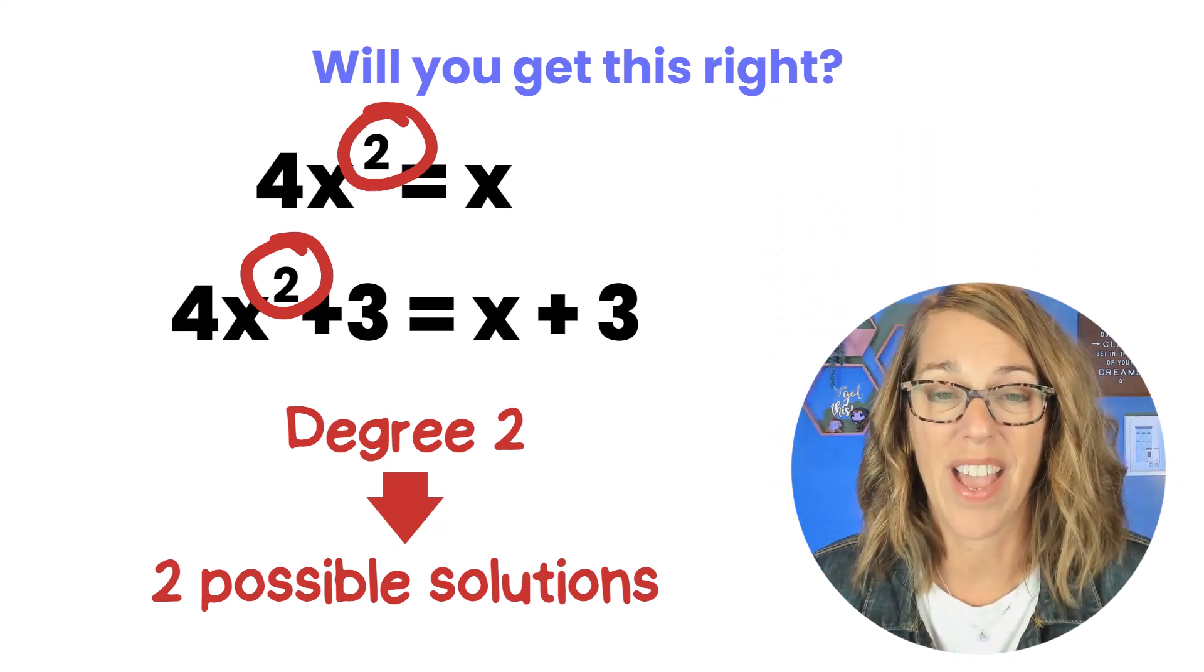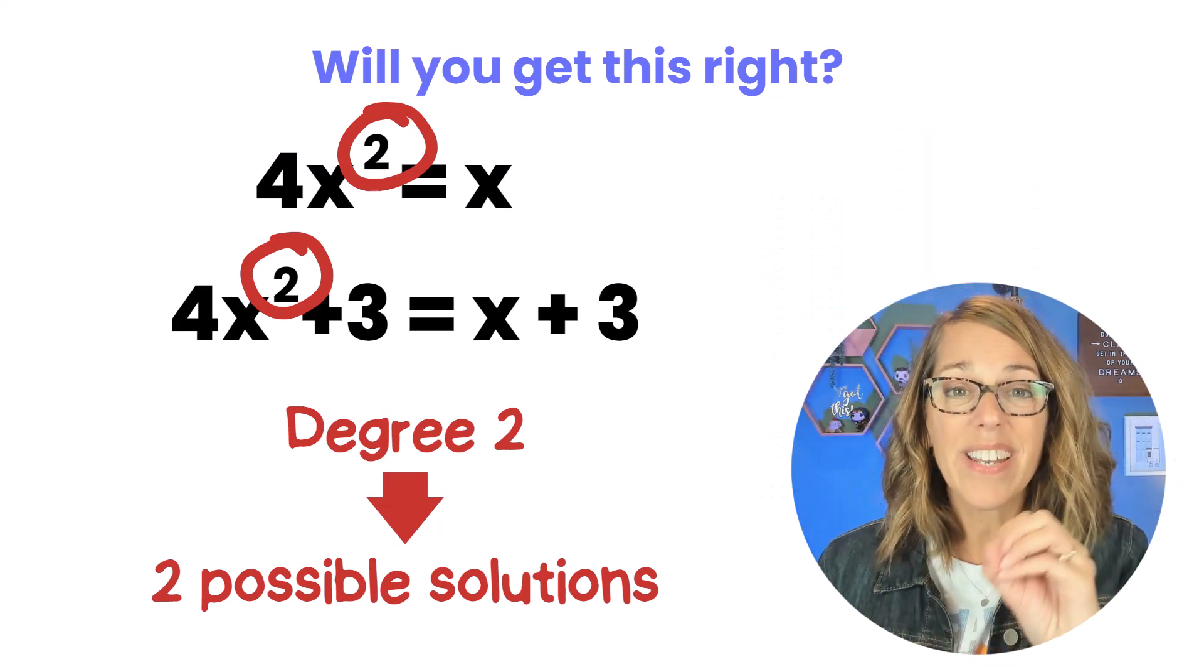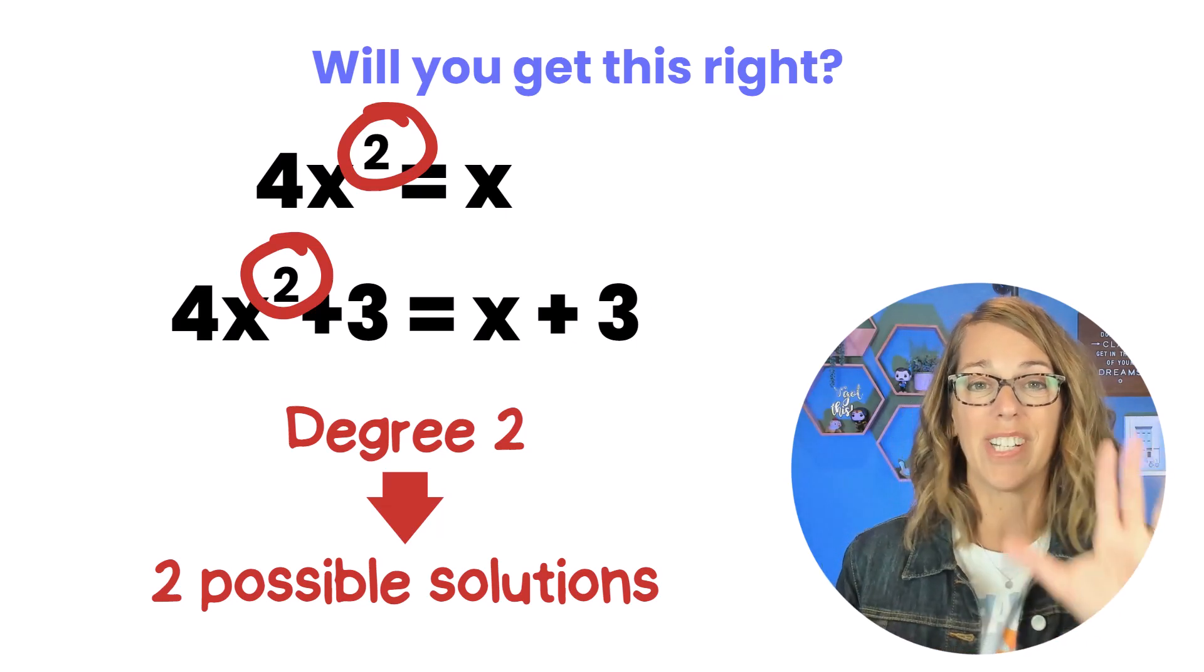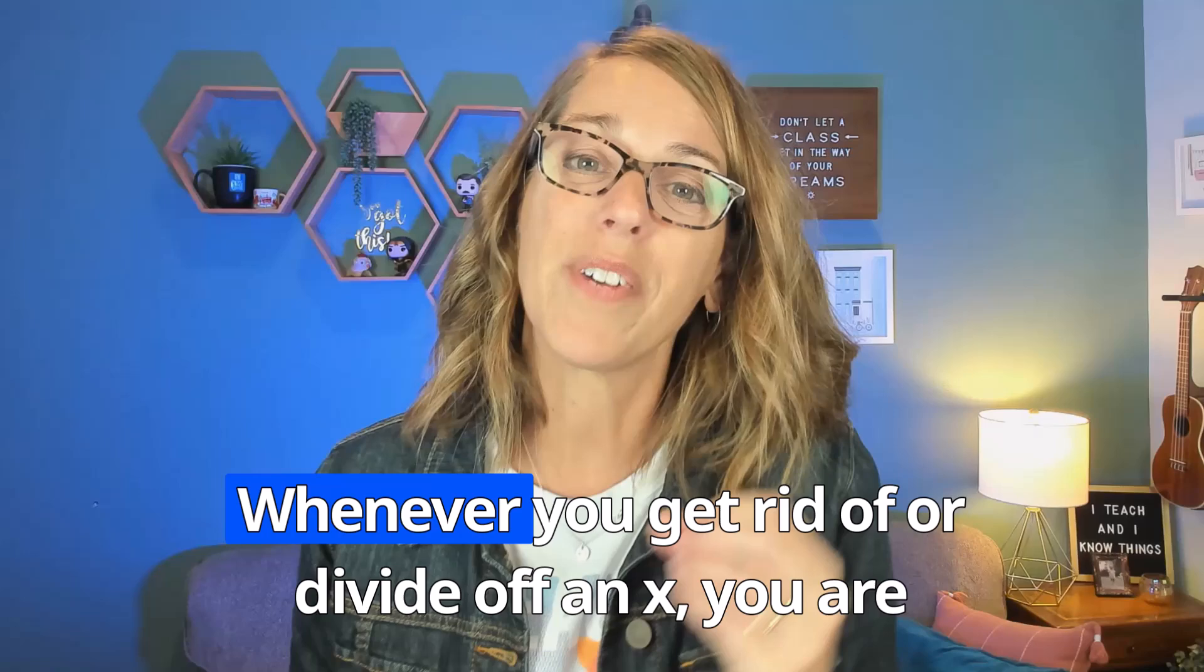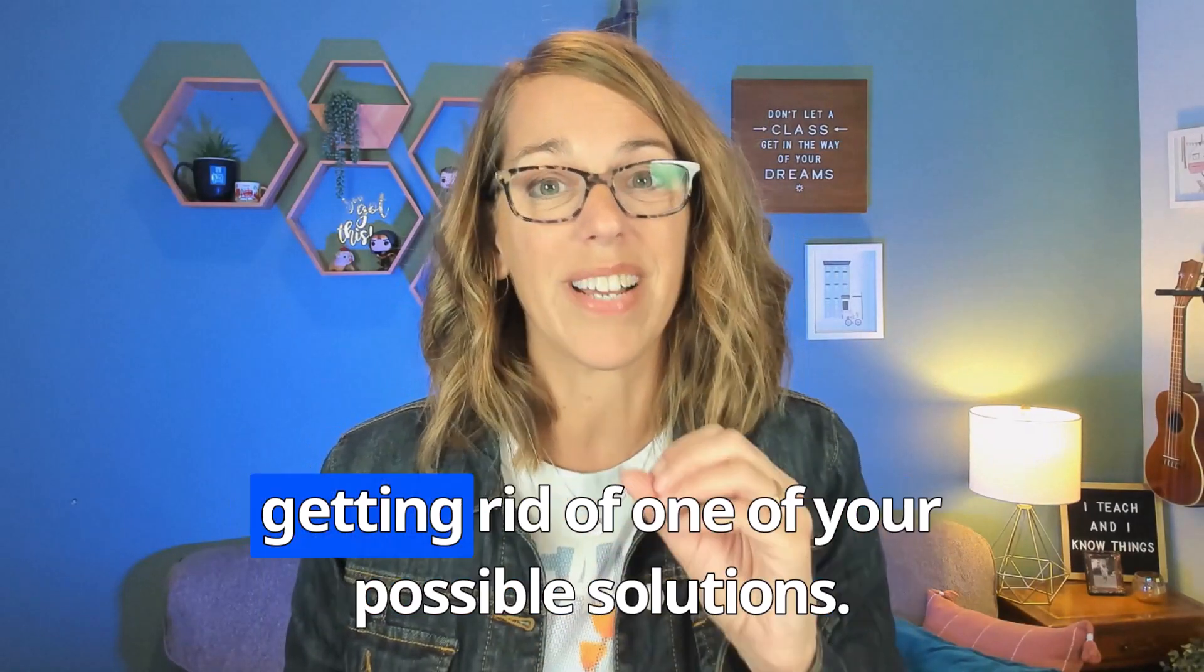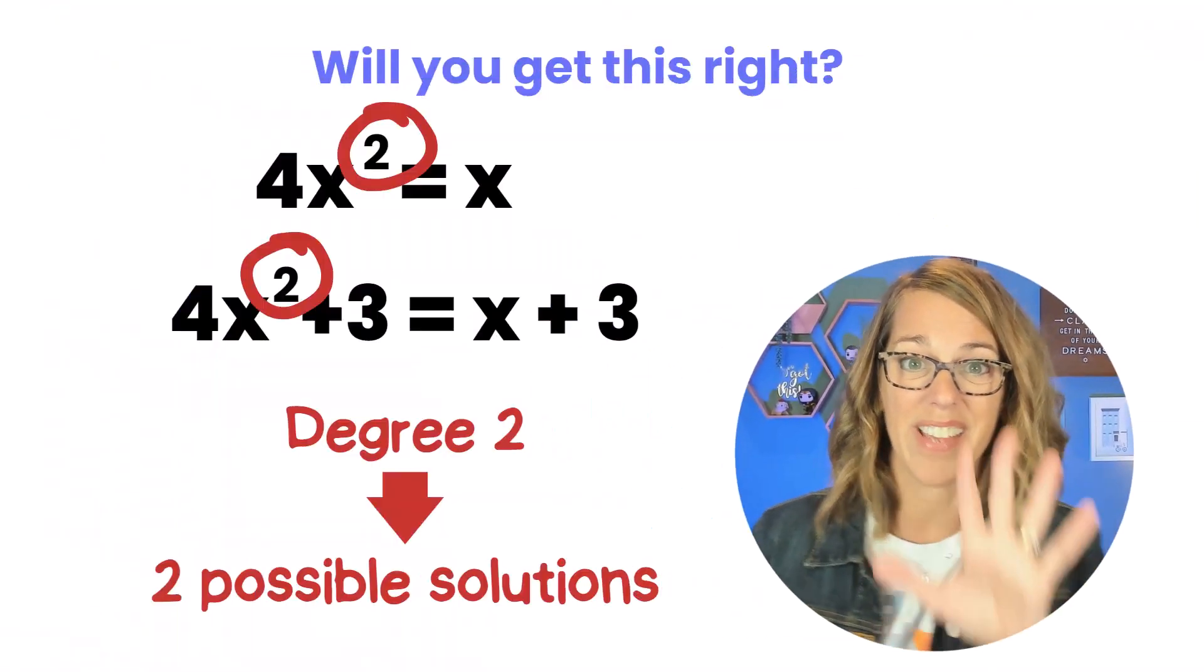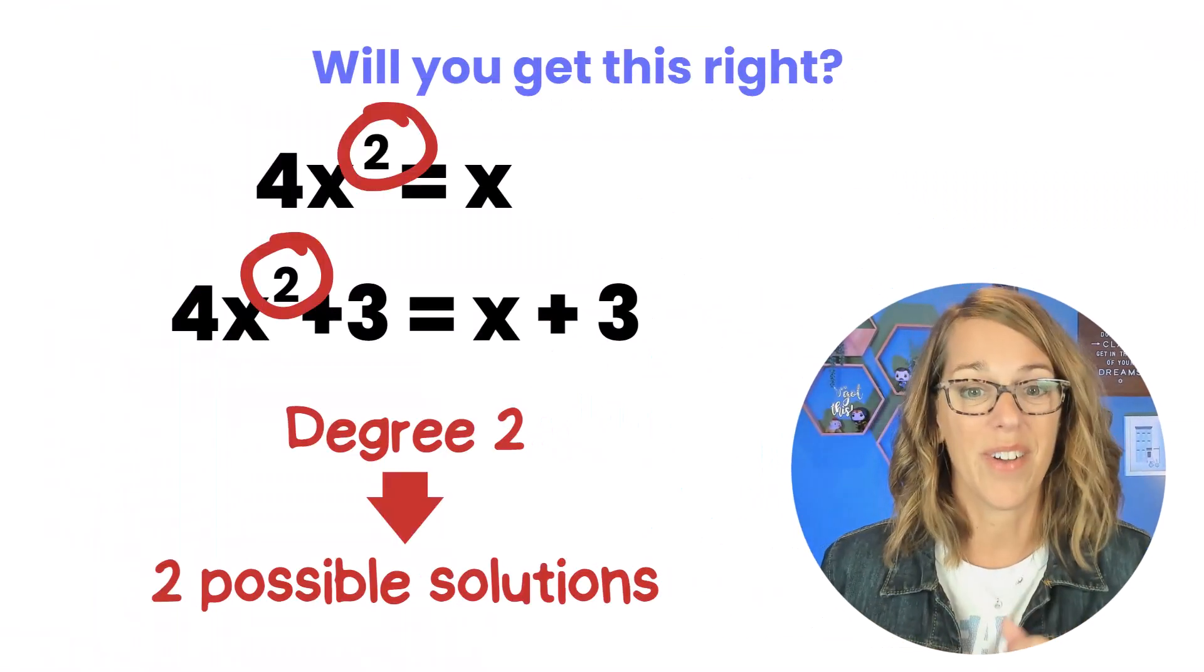So we do not want to get rid of x. If we get rid of x we are getting rid of a solution. Let me say that one more time. Whenever you get rid of or divide off an x, you are getting rid of one of your possible solutions. Okay so how do we do this the correct way?